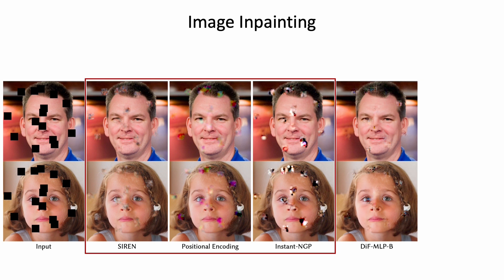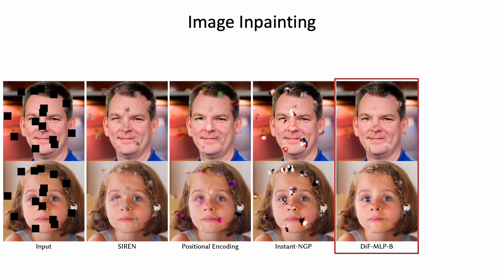Instant NGP and other representations can accurately approximate the training pixels, but result in random noise in the untrained mask regions. Interestingly, even without pre-training and priors from other images, our DIF MLP-B is able to capture structural information to some extent within the same image being optimized.